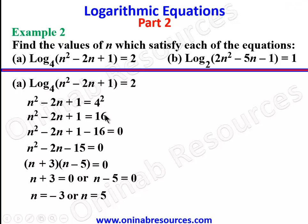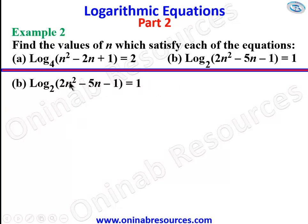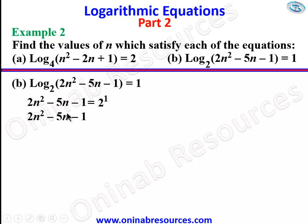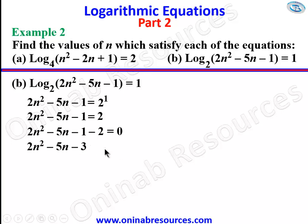We go to Example 2b. For 2b we have log to base 2 of (2n² − 5n − 1) = 1. Applying the indices-logarithm relationship, we have 2n² − 5n − 1 = 2 raised to the power of 1, which equals 2. Forming the quadratic equation: 2n² − 5n − 1 − 2 = 0, so 2n² − 5n − 3 = 0.